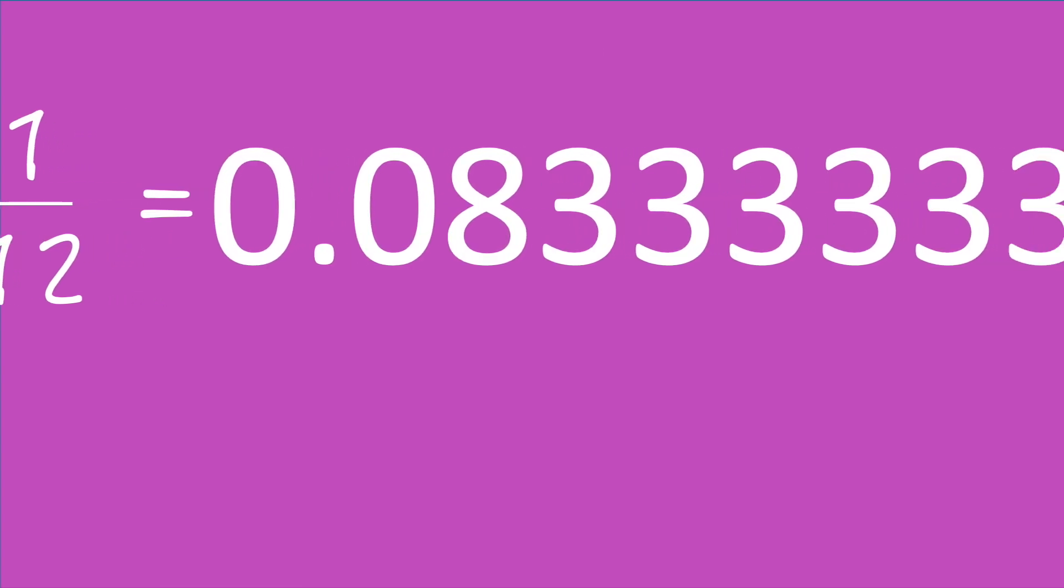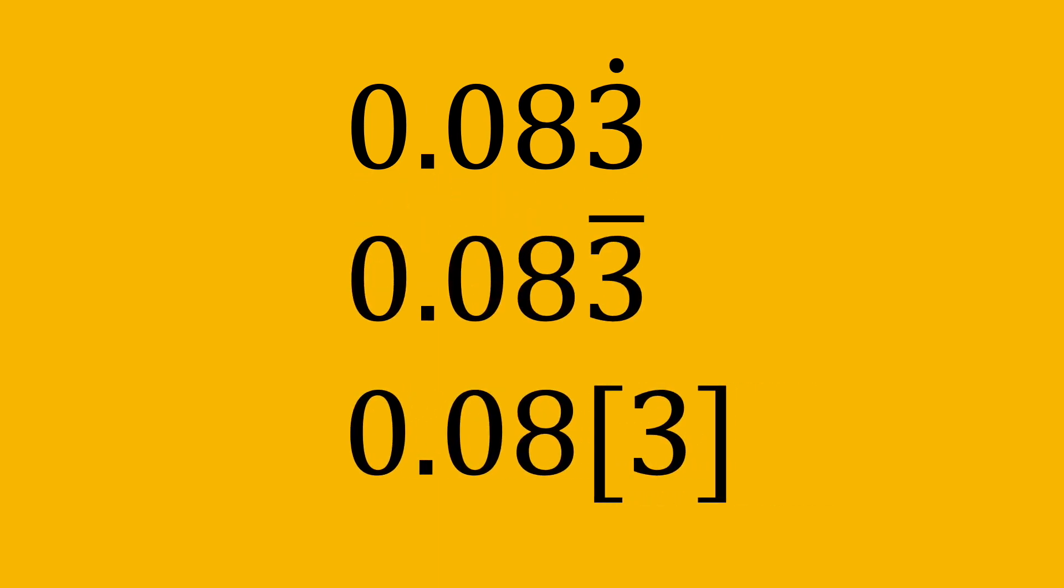Obviously, we can never write out a recurring decimal completely, so we have to use new notation. This, and the need for calculators to round to the nearest hundred millionth or so, means that often there's a lot of confusion about what these numbers actually are, and which fractions they're equivalent to.